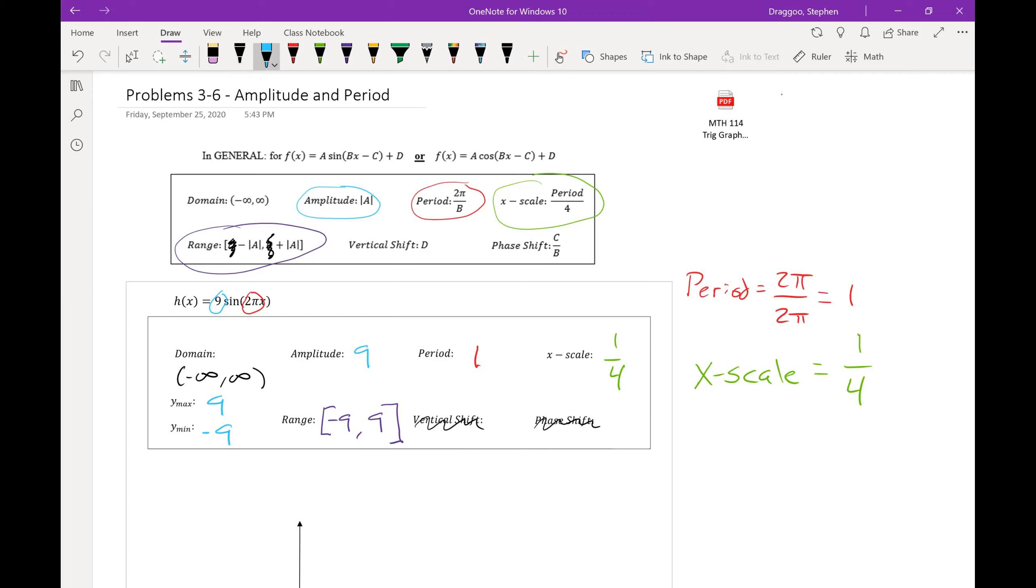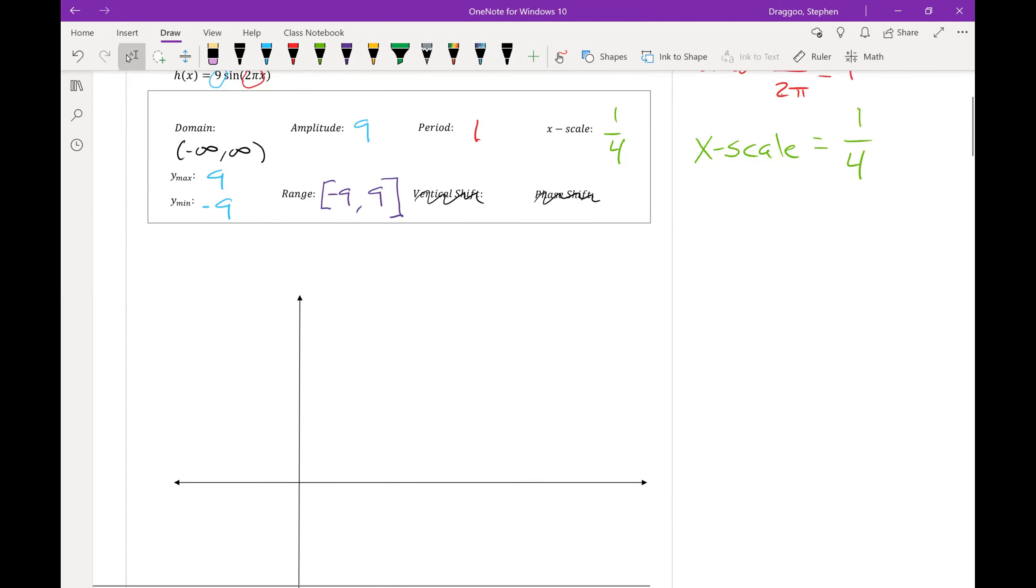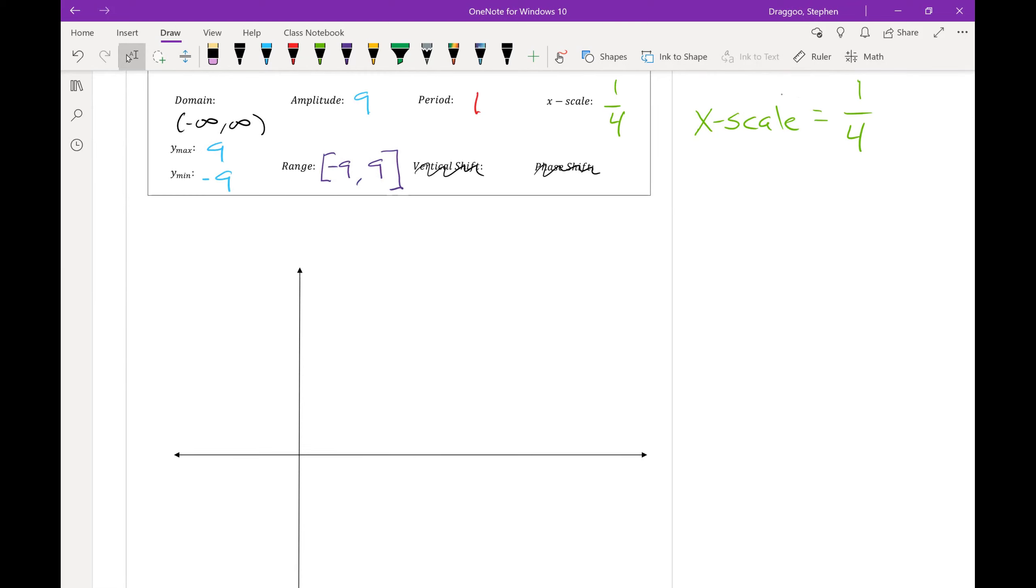Putting all of that stuff into practice, so I'm going to want to mark off my graph with the x scale, starting at 0 and then going out 4 places. Since there are always 5 key points that I care about when I'm graphing any sine or cosine function, I want to have my starting point and 4 others. So I'm going to start at 0 and count out 4 more places. So 1, 2, 3, 4. And I'm going to count by that x scale, which is 1/4. So 1 over 4, 2 over 4, 3 over 4, and 4 over 4.